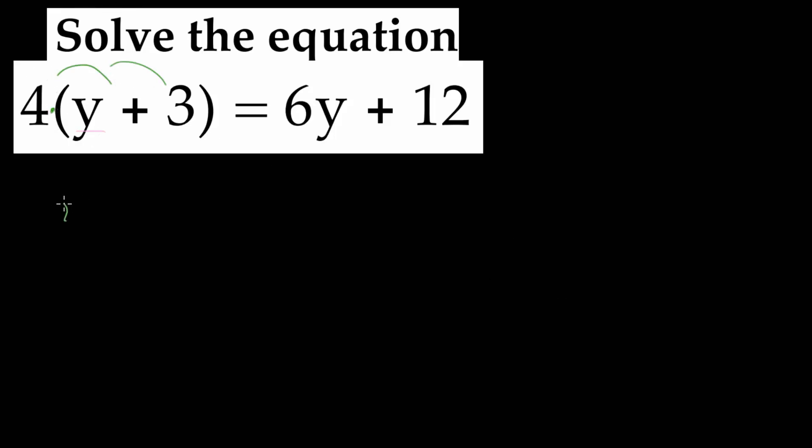We can rewrite this as 4y, 4 times y, and then we do 4 times positive 3, which is positive 12. On the right-hand side, we'll just rewrite 6y plus 12. We've simplified this equation so that it now just has variables on both sides of the equation.